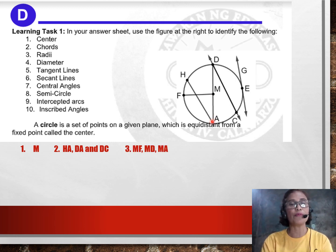And next, number 4, diameter. We can see there's only one diameter here. This one, a chord that passes through the center. We only have segment DA. Number 5, tangent lines. We only have one tangent line here, which is line GE. Now, the secant line. We have only one secant line. And that is line DC.